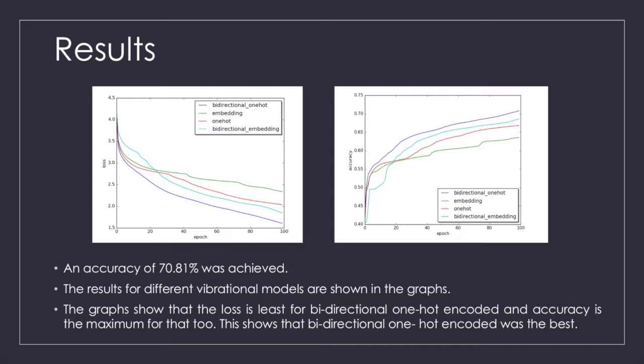The left image shows the graph for loss with each epoch. Loss is least for bi-directional one-hot encoded. The right image shows the graph for accuracy with each epoch. Accuracy is maximum for bi-directional one-hot encoded. This shows that bi-directional one-hot encoded was the best. An accuracy of 70.81% was achieved by training a bi-directional one-hot encoded model.